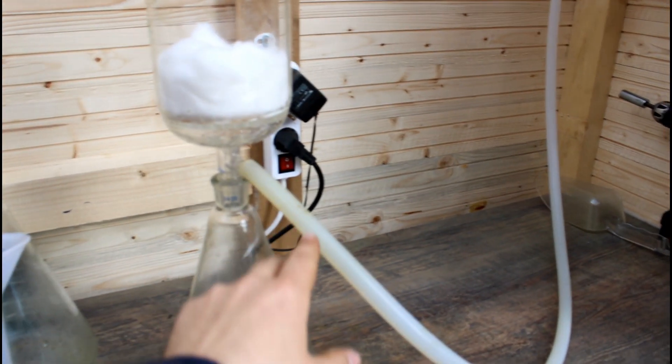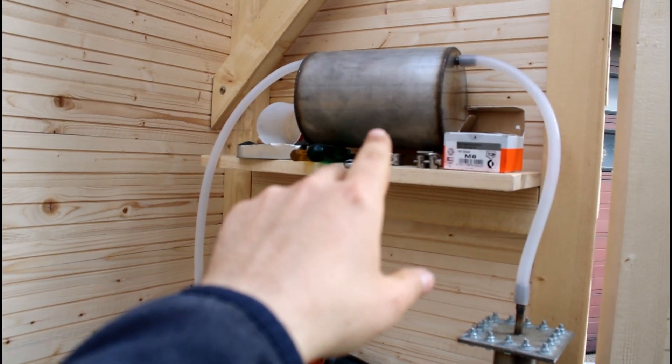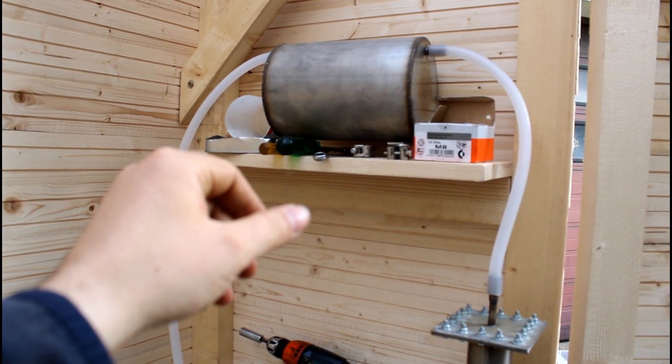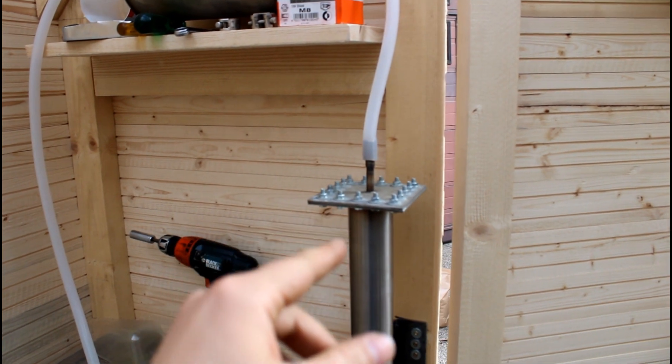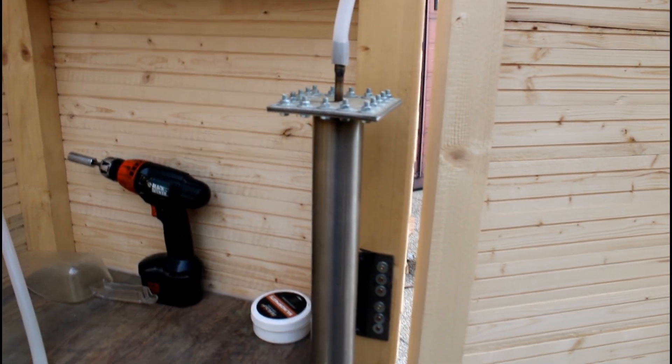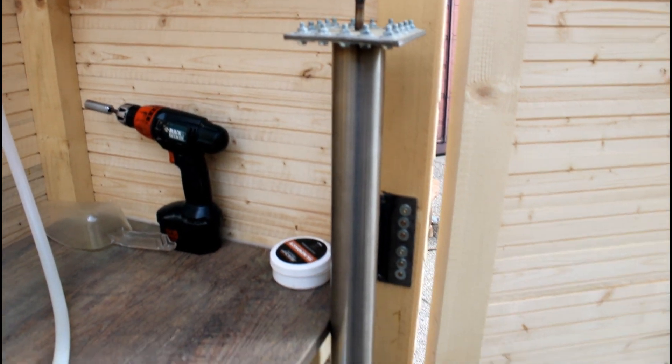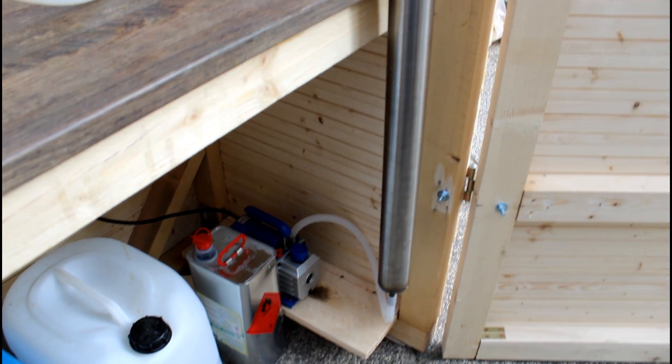And if you follow the tube it goes into a trap for excessive liquid. So for example if I accidentally suck some liquid in here it should not destroy the vacuum pump. So this is basically just a liquid trap. And in order to trap the vapors I'm using this tube here. It's filled with activated charcoal.